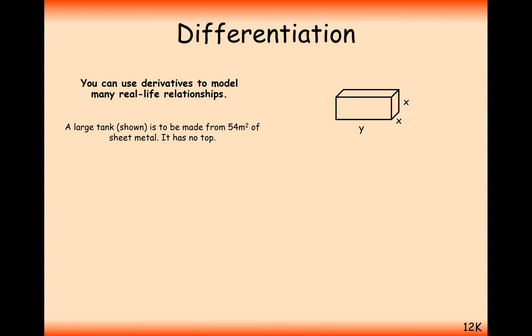Let's have a look at a slightly more difficult question here. A large tank is to be made from 54 meters squared of sheet metal, so that's the surface area. It has no top. Show that the volume of the tank can be given by v equals 18x minus 2 thirds x cubed. So what we should be able to do is from our diagram and the information of surface area 54 meters squared, create this formula.